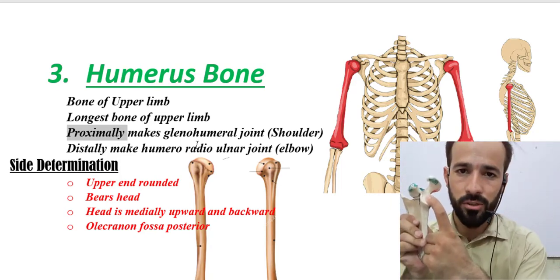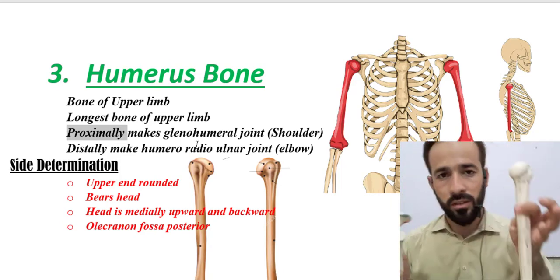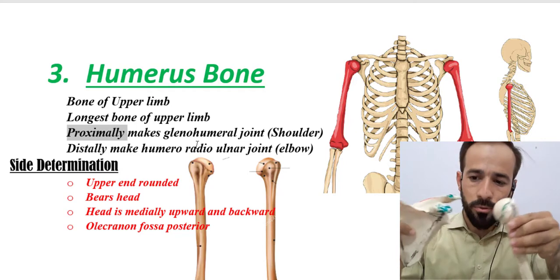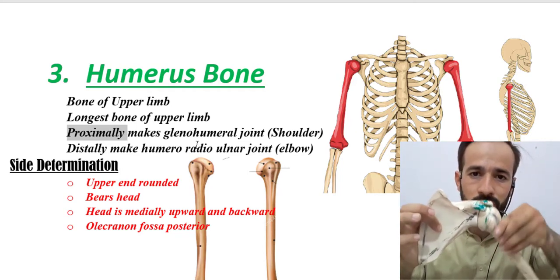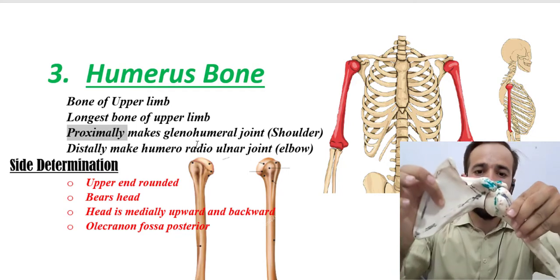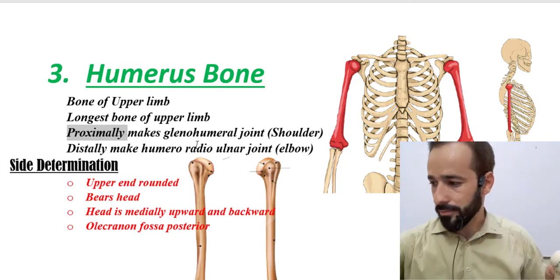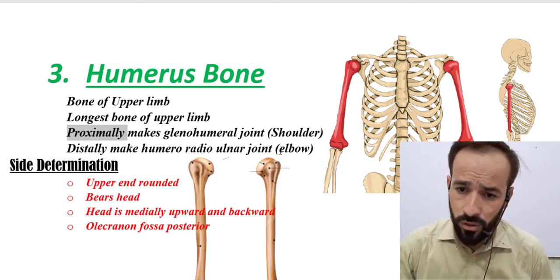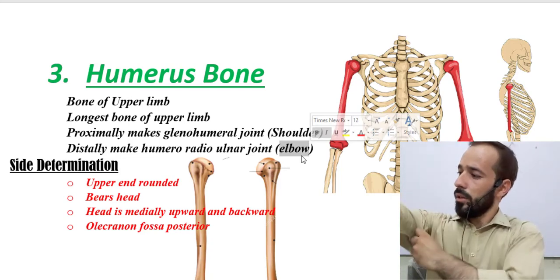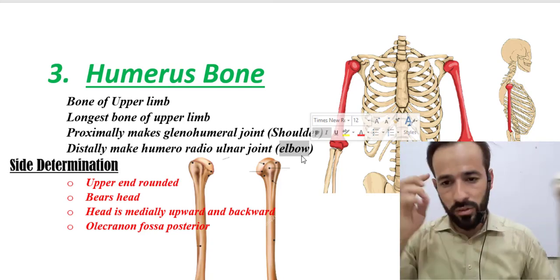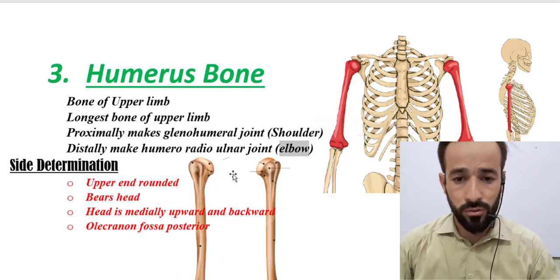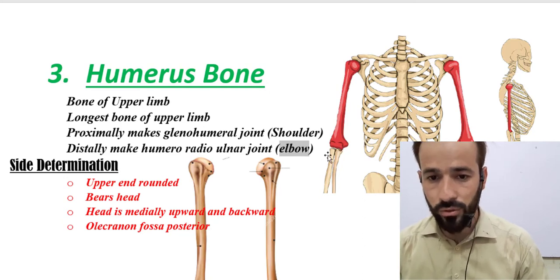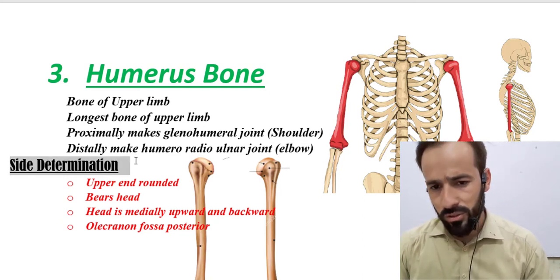Proximally, the humerus makes the glenohumeral joint — here we have the scapula, the glenoid cavity, and the head of the humerus. This proximal end forms the glenohumeral joint, also known as the shoulder joint. Distally, it makes the humeroradial-ulnar joint, also known as the elbow joint.